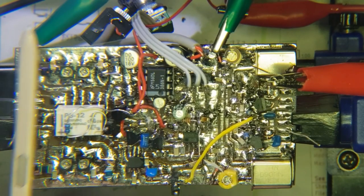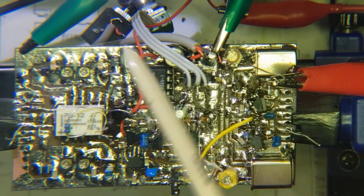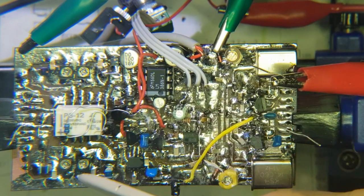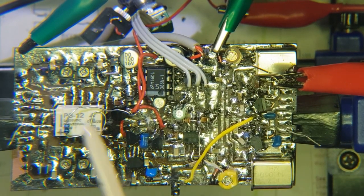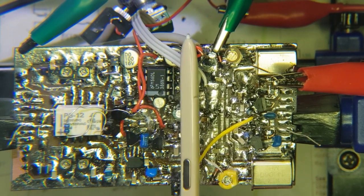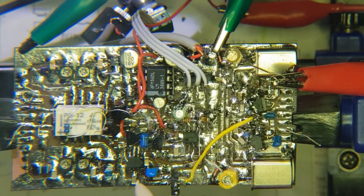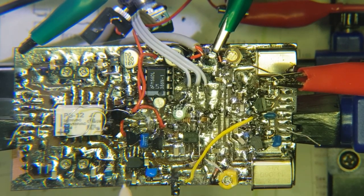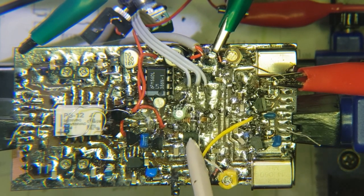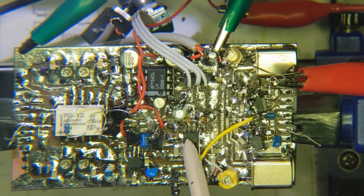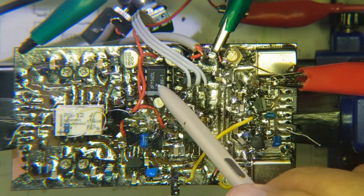First up, a reminder: this is the bandpass filters for 40 and 20 using surface mount inductors there. This section here is the receiver back end, so an SA612 product detector there, and a dual op-amp filter and preamp, and an LM386.